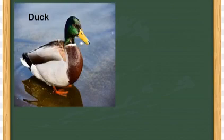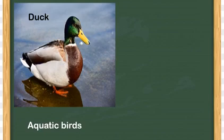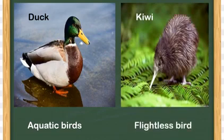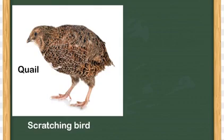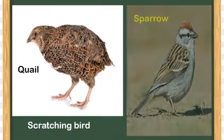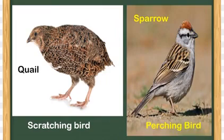To recap: the duck is an aquatic bird — it lives in water and has webbed toes to help it swim. Birds like the kiwi are called flightless birds because their body is too heavy and they cannot fly. Birds like the quail have one short toe at the back and three toes in the front — it is a scratching bird that scratches the ground and eats buried food. Birds like sparrows are called perching birds — they have three toes in the front and one at the back.